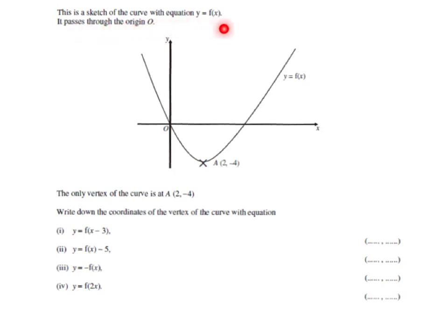We've got a sketch of the curve with the equation y equals f(x). It goes through the origin. The only vertex of the curve is at (2, -4). That's kind of like where it turns at the bottom. The coordinate is (2, -4).